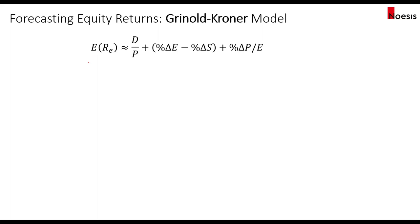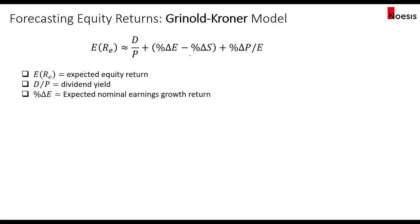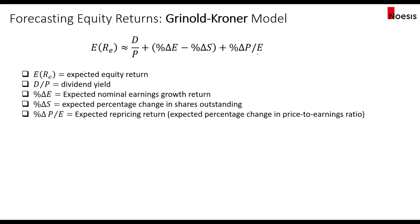Let's review through the model. First, we have the expected return on equity, and this is approximately equals to D over P, which is the dividend over price. This is the dividend yield of the equity market, plus the expected nominal earnings growth return, then we minus the percentage change in shares outstanding, and lastly we plus the expected repricing return or the percentage change in the price-to-earnings ratio of the equity market.